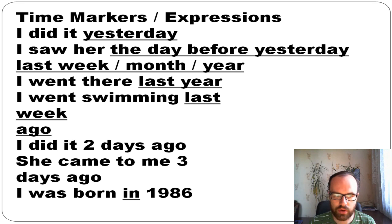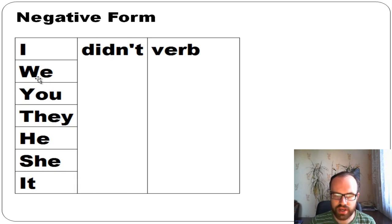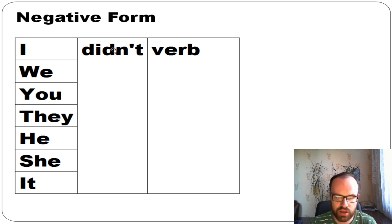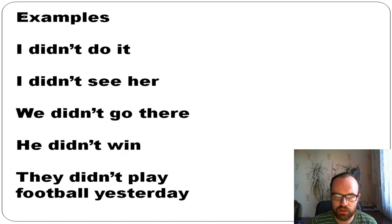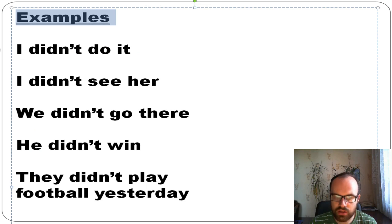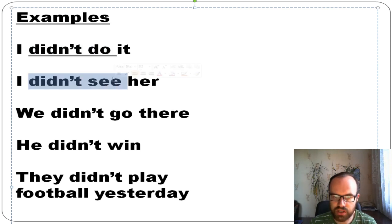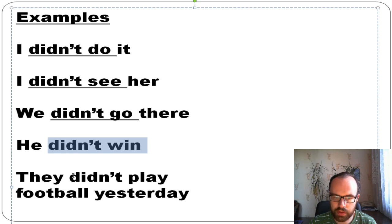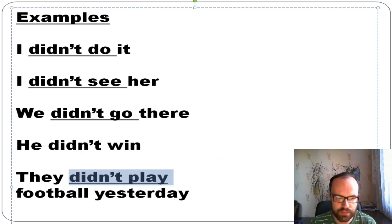To form a negative in past simple, use: subject + didn't + verb. For example: 'I didn't do it,' 'we didn't do it,' 'he didn't do it.' In present simple we use doesn't/don't, but in past simple it's always 'didn't.' Examples: 'I didn't see her,' 'I didn't go,' 'I didn't win,' 'I didn't play.'